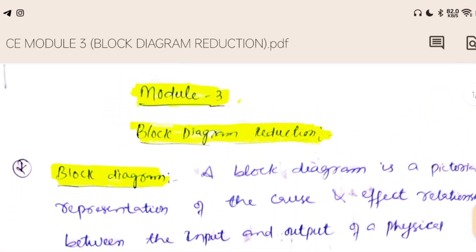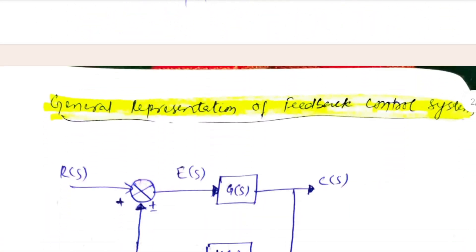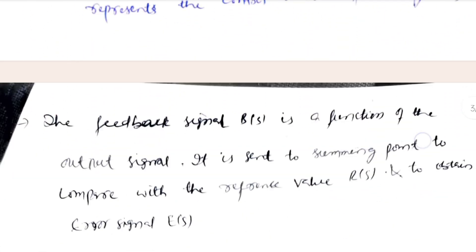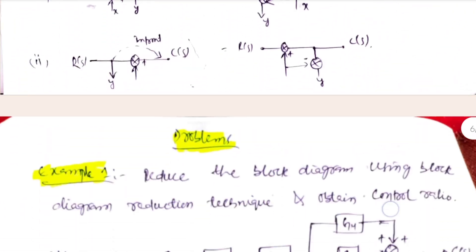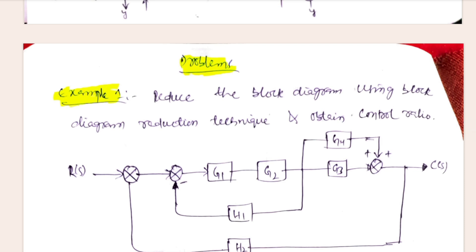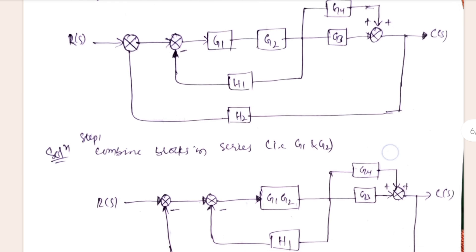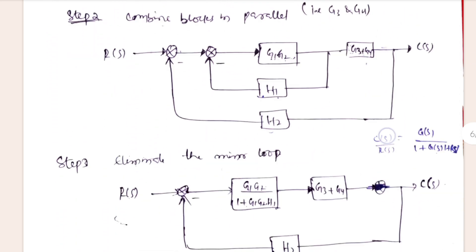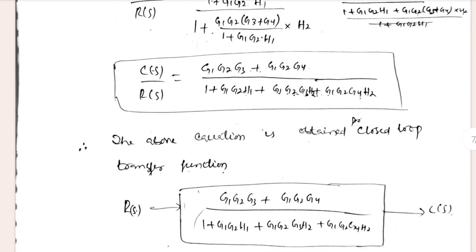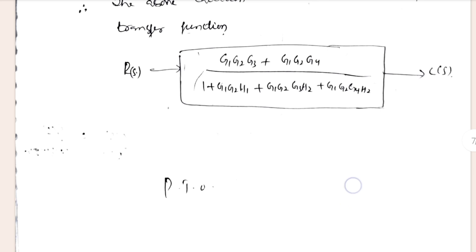Here is the block diagram reduction section — this is the definition part and the rest is numerical problems. There are a lot of numericals which you have to practice. For example, problem one: reduce the block diagram using block diagram reduction technique and obtain the control ratio. A figure will be given and you have to reduce it to find the transfer function. First go through the rules, understand them, then you will be able to solve these varieties of problems easily.